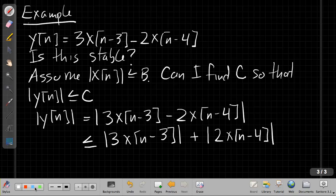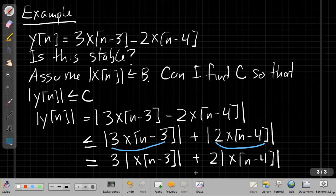Then the next property I use here is I look at this and say, each of these terms here is a product. So a product, the magnitude of a product is in fact exactly equal to the product of the magnitudes. We know that from working with complex numbers or real numbers. So we can say this is equal to 3 times the magnitude of x[n-3] plus 2 times the magnitude of x[n-4]. I need an upper bound on this.